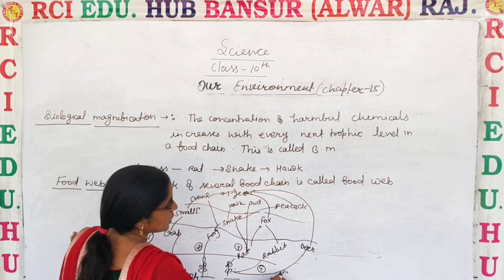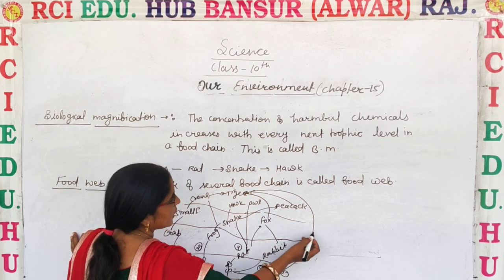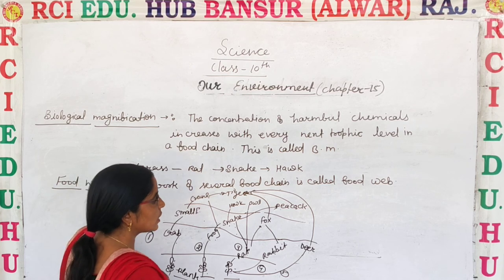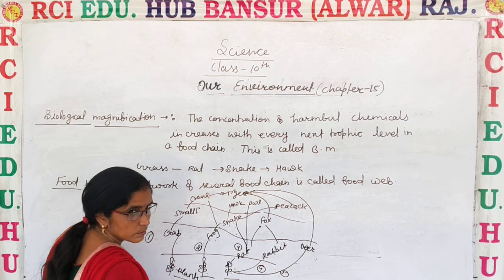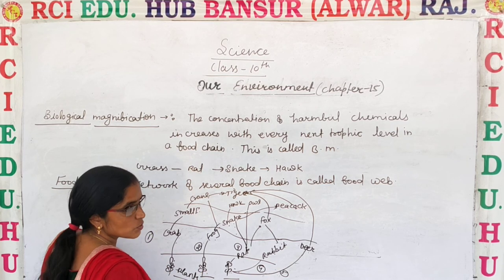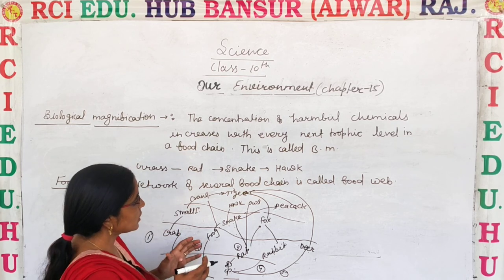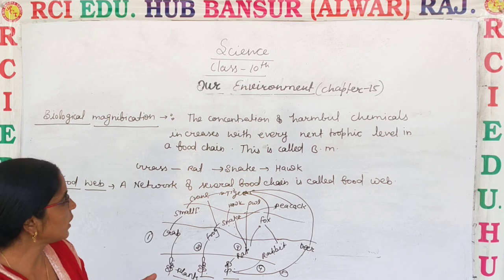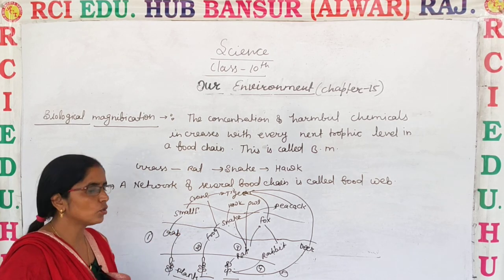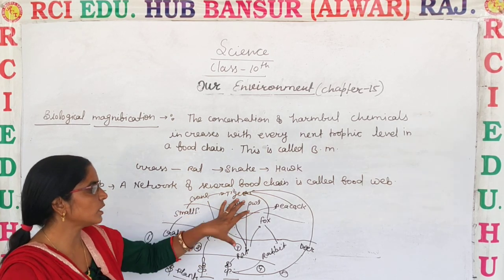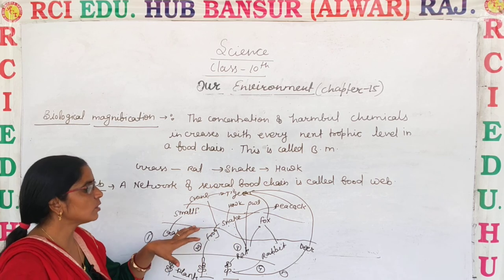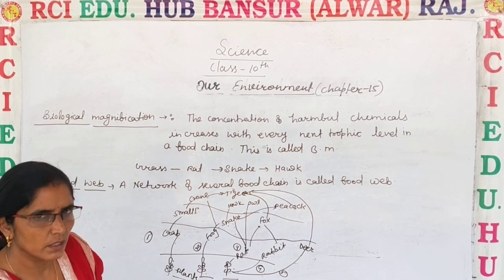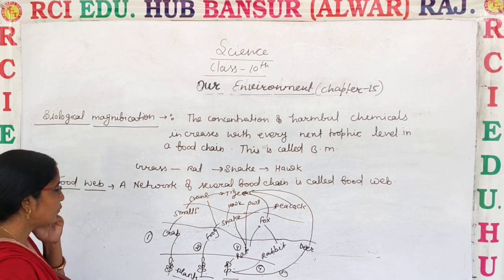The fourth food chain is: the plant is eaten by the deer, and the deer is eaten by the tiger. The deer can also be eaten by the fox. All these food chains are interconnected, forming a network — and that network is known as the food web.